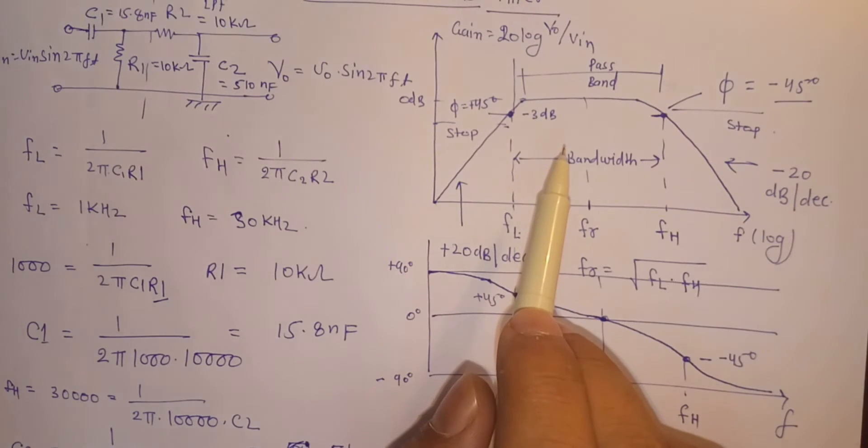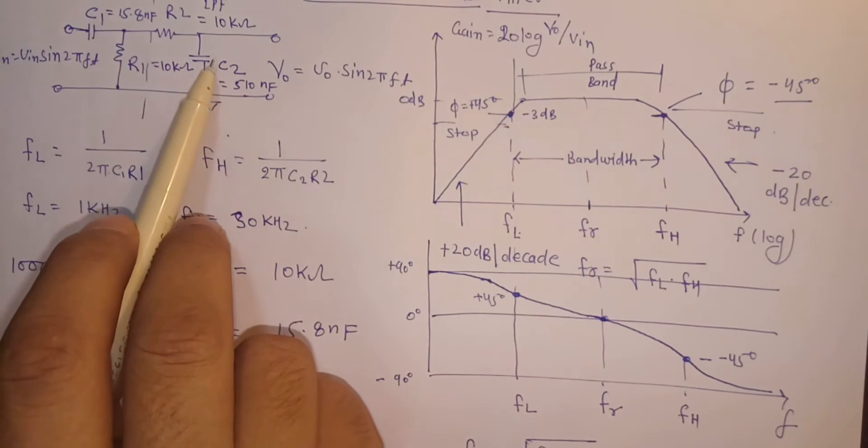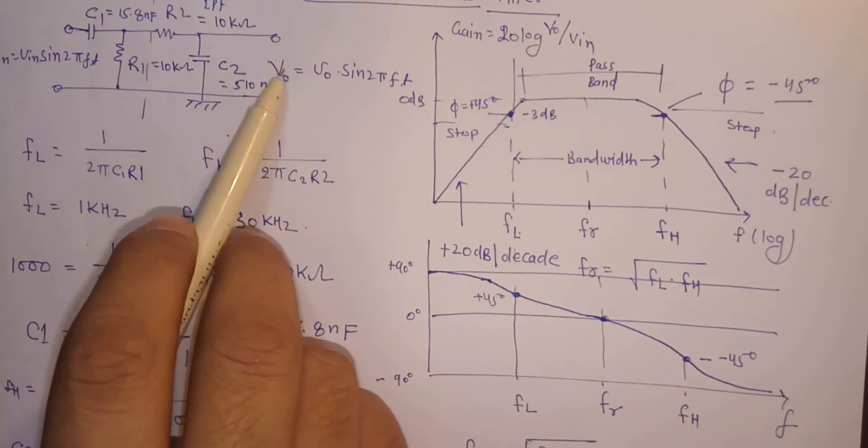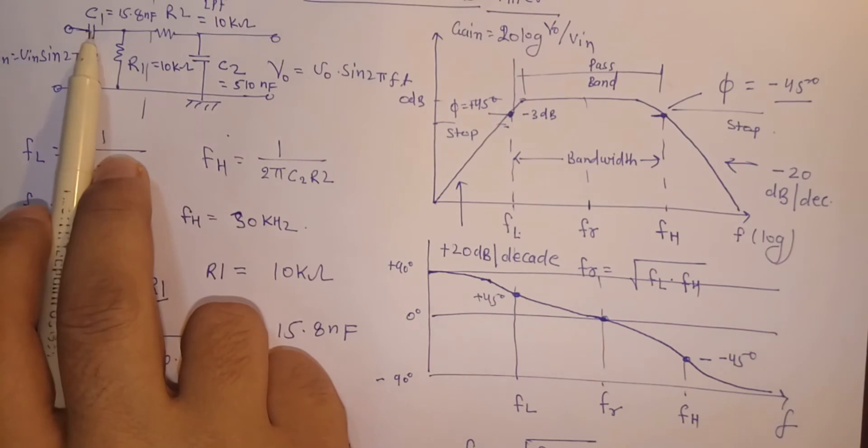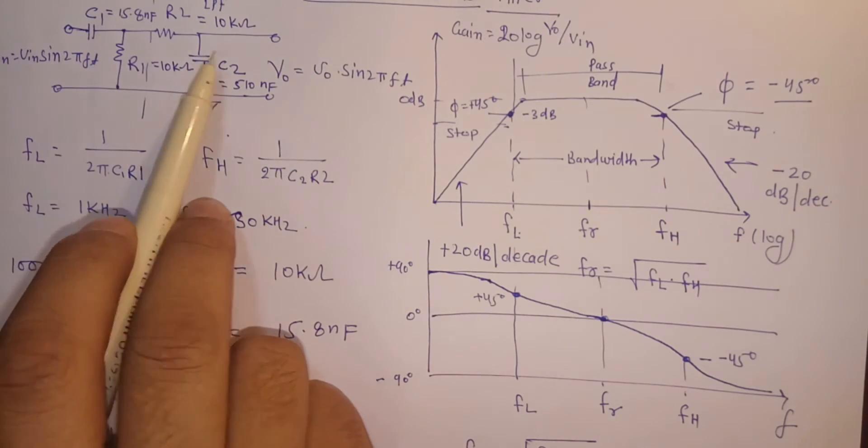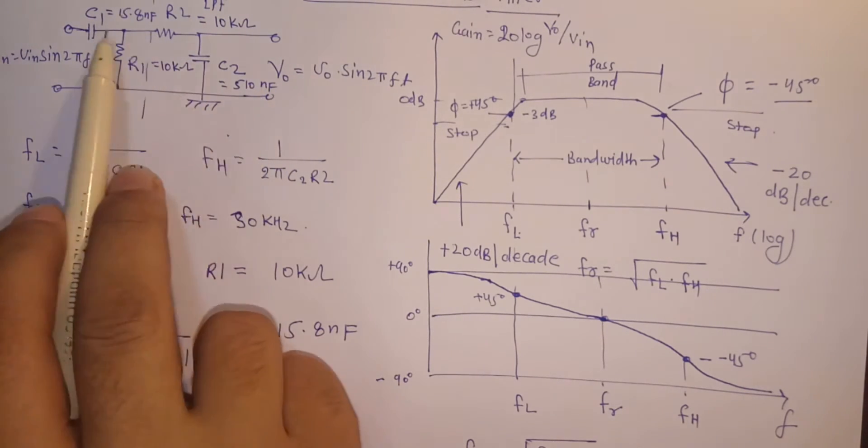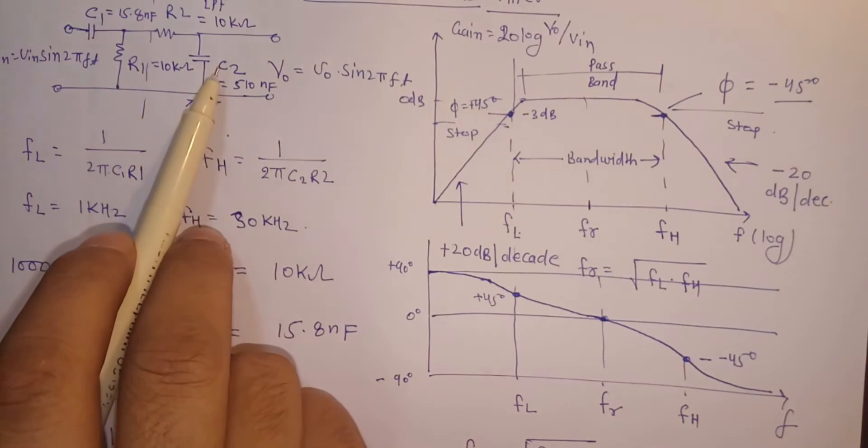The passive bandpass filter is classed as a second order filter because there is a first order high pass and a first order low pass, making it second order with two reactive components. If there are n reactive components in the filter, then it will be known as an nth order passive filter.